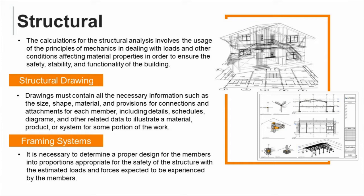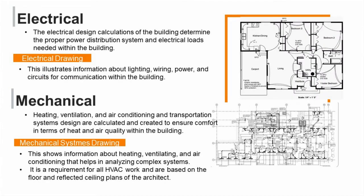In framing systems, it is necessary to determine a proper design for the members into proportions appropriate for the safety of the structure, with the estimated loads and forces expected to be experienced by the members. For electrical calculations, the electrical design calculations of the building determine the proper power distribution system and electrical loads within the building. In electrical drawing, this illustrates information about lighting, wiring, power, and circuits for communication within the building.